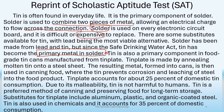Tin is also a primary component of food-grade tin cans manufactured from tin plate. Tin plate is made by annealing molten tin onto a steel sheet. The resulting metal formed in cans is then used in canning food, where the tin prevents corrosion and leaching of steel into the food product. Tin plate accounts for about 25% of domestic tin consumption. Due to its malleability, tin is not harmful to humans. Tin is a preferred method of canning and preserving food for long-term storage. Substitutes for tin plate include aluminum, plastic, and organic coated steel. Tin is also used in chemicals, and it accounts for 35% of consumption.